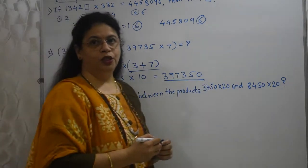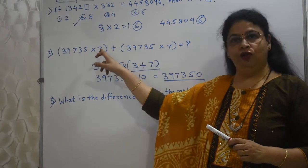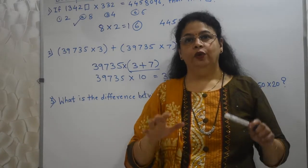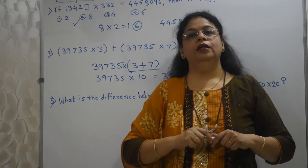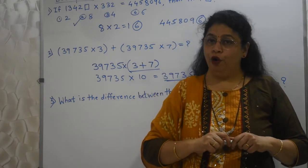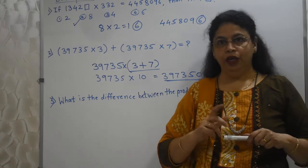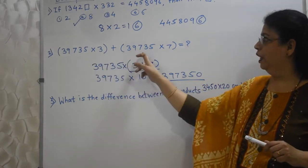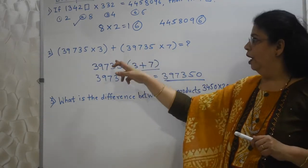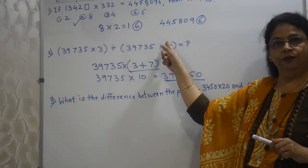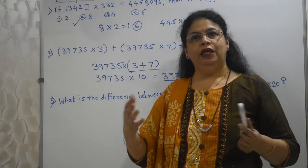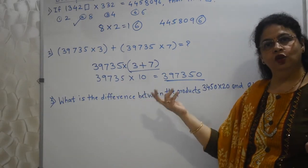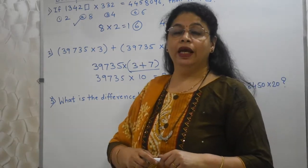I have seen students doing this. They multiply this by 3, then they multiply this by 7, then they add the answers. This is going to take lot of time, students. In this competitive exams, what is important is the time management. I have been telling you this. So you have to save time. So you have to work smartly. So here, we have taken out 39735 common and I have added 3 and 7, which is 10. So any number multiplied by 10, I have to just add 1, 0. I have to add 1, 0 to this number. So my answer is ready within few seconds.